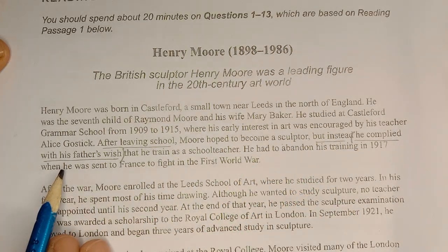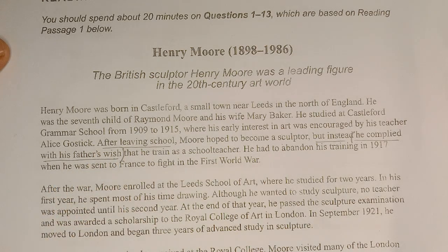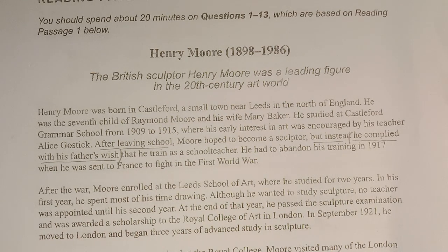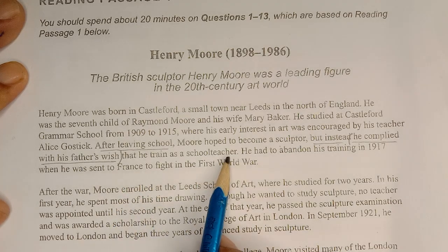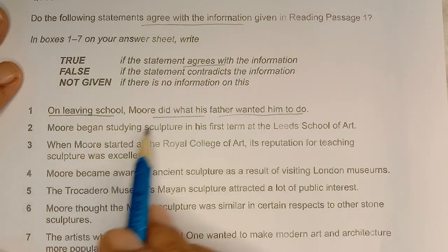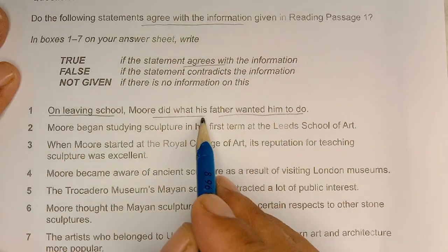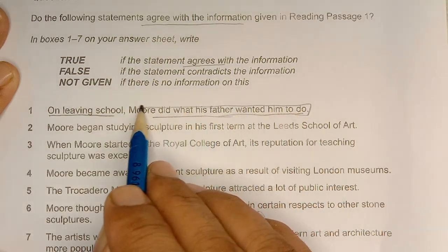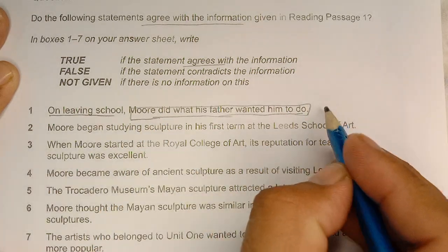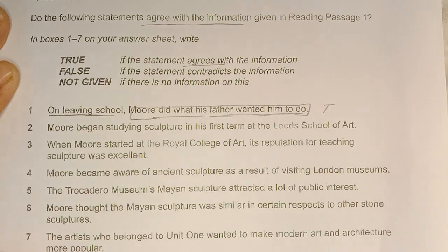He complied with his father's wish — اس نے وہی کیا جو اس کے باپ نے کہا تھا۔ آپ دیکھ سکتے ہیں کہ یہاں پہ آپ کی statement جو ہے as it is match کر رہی ہے۔ He trained as a schoolmaster — according to his father's wish. So this statement is TRUE.